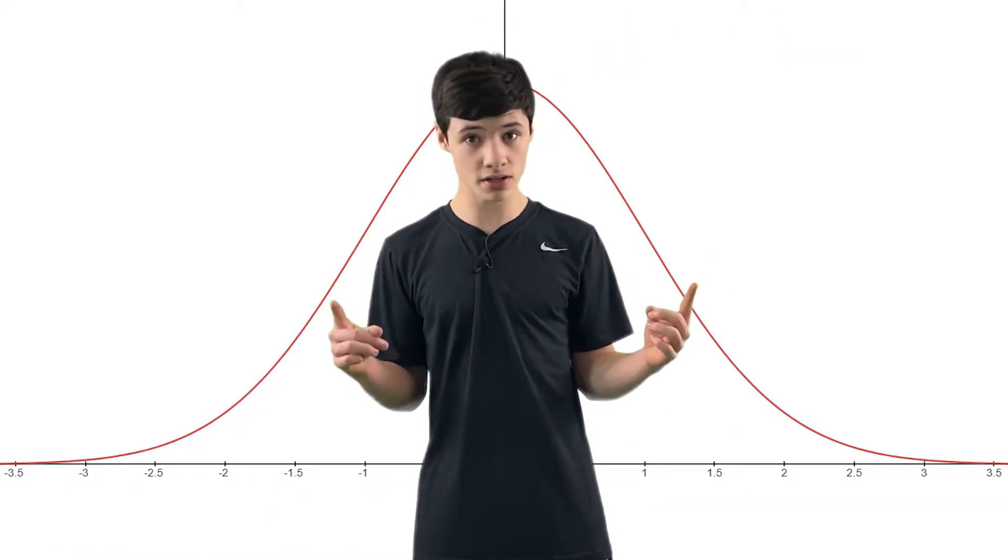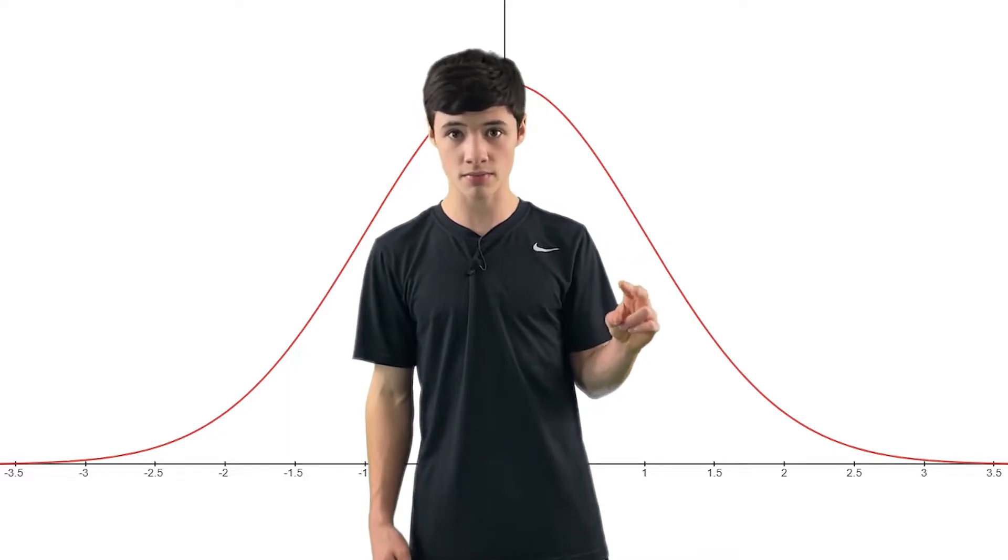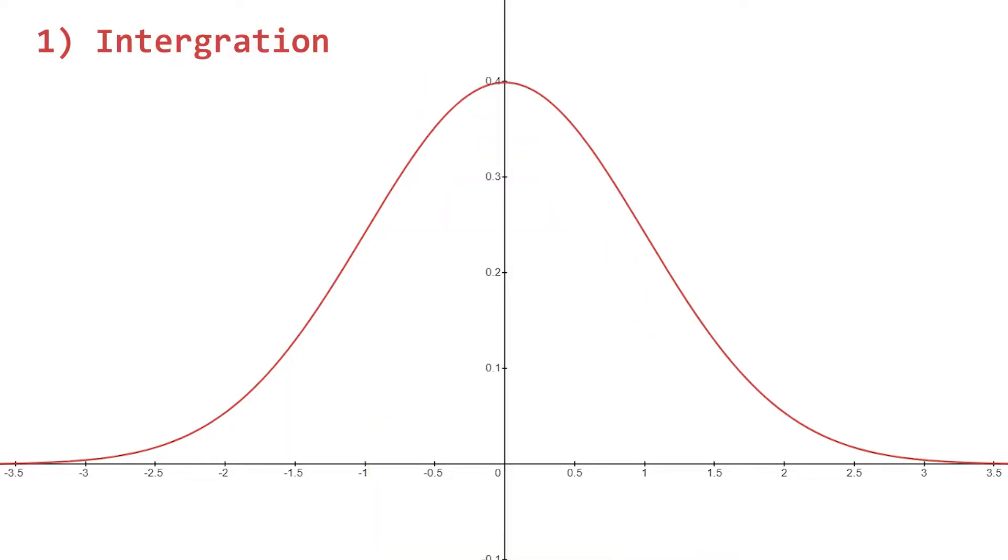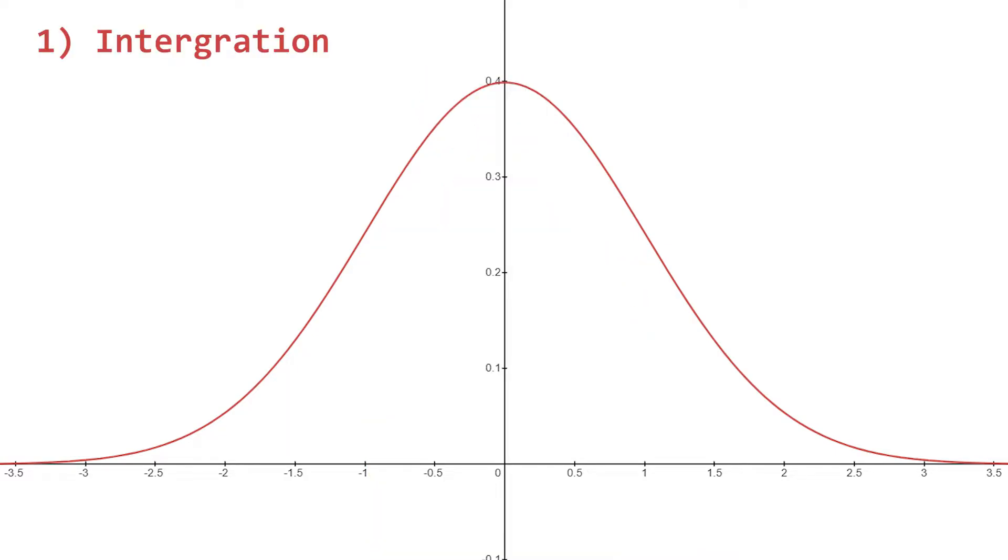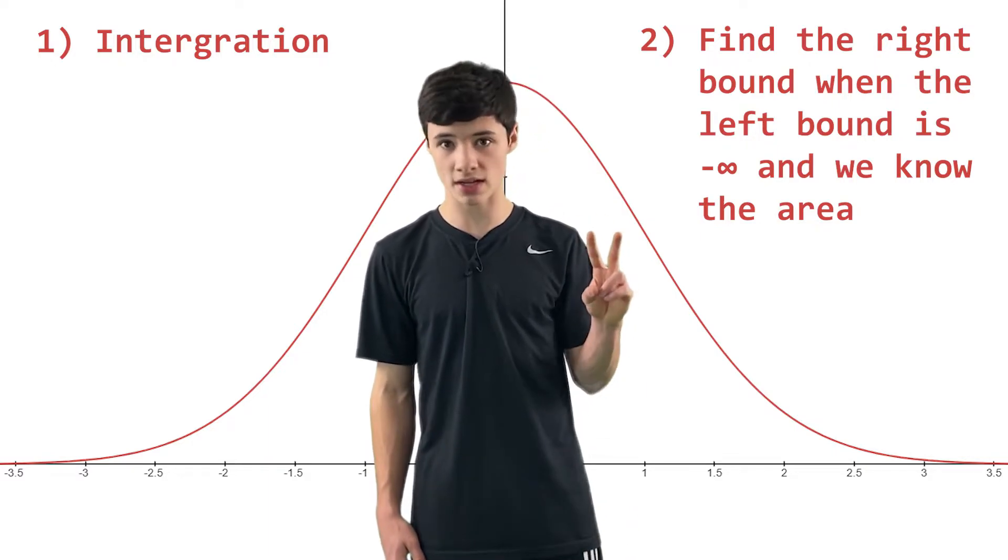Once we have a mean and a standard deviation, we can do two main things with it. We can see how likely it is to get a value from a range of values, and we can also see what value we get when we have a specific probability. And in this video, we're going to be concerned with the second option.